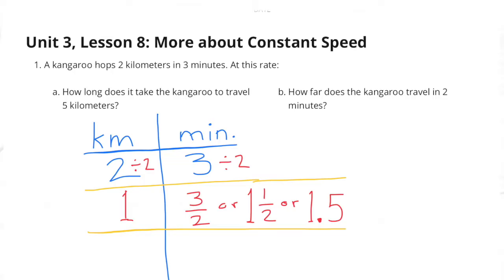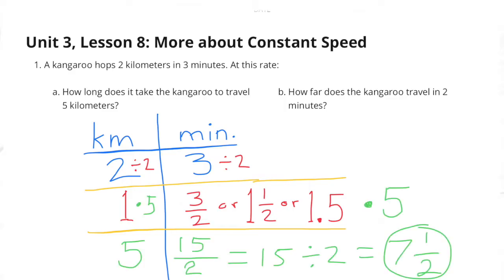The kangaroo hops two kilometers in three minutes. In order to find out how far it goes in one kilometer, let's divide the two by two to make it one kilometer. Since we divided the kilometers by two, let's divide the minutes by two. Three divided by two is three halves, or one and a half, or 1.5. So the kangaroo hops one kilometer in one and a half minutes.